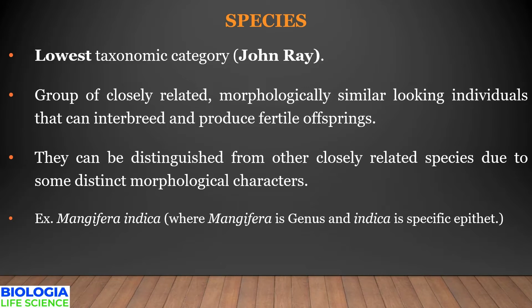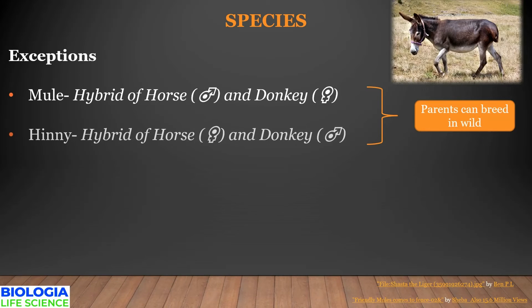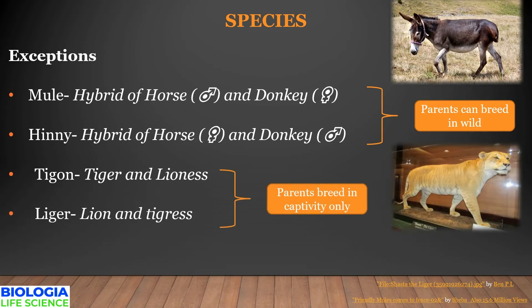They are reproductively isolated and form a genetically closed system. There are a few exceptions: the mule, a hybrid of a male horse and female donkey, and the hinny, a hybrid of a female horse and male donkey — both offspring are sterile. Similarly, the tigon (hybrid of tiger and lioness) and liger (hybrid of lion and tigress) can be produced only in captivity; females are fertile but males are sterile. So these cannot be considered biological species.